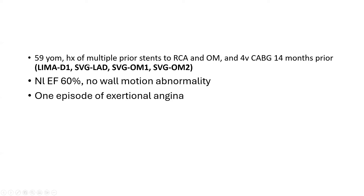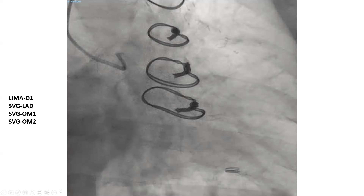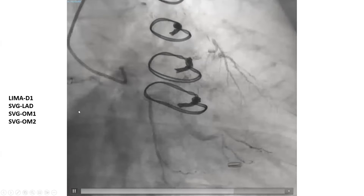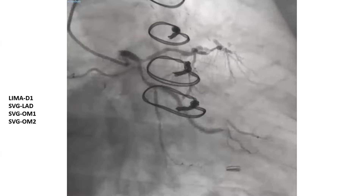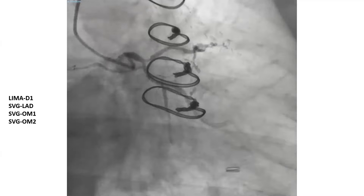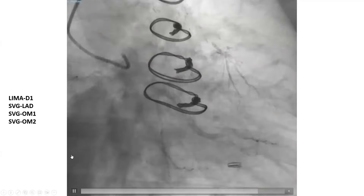This is a 59-year-old man with multiple prior stents to the right and OM, and he has four-vessel CABG: LIMA to diagonal, vein graft to LAD, vein graft to OM1, and vein graft to OM2. This is his angiogram starting with the native angiography — an RAO caudal view. Look carefully: you can already tell whether the vein grafts are patent or not just by looking at this angiogram.